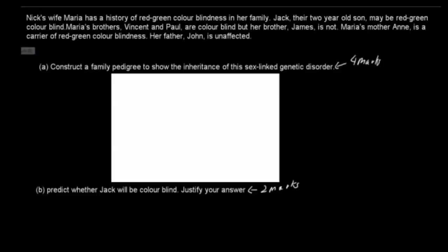The question is: Nick's wife Mary has a history of red-green colorblindness in her family. Jack, the 2-year-old son, may be red-green colorblind. Maria's brothers Vincent and Paul are colorblind, but her brother James is not. Maria's mother Anne is a carrier of red-green colorblindness. Her father John is unaffected. Part A: Construct a family pedigree to show the inheritance of this sex-linked genetic disorder, worth 4 marks. Part B: Predict whether Jack will be colorblind and justify your answer, worth 2 marks.